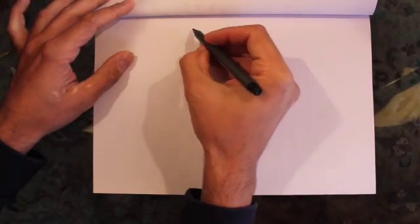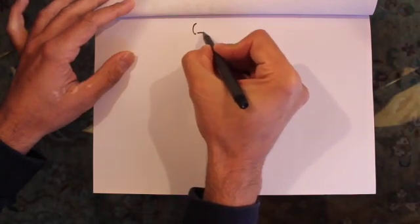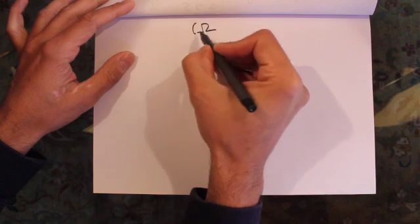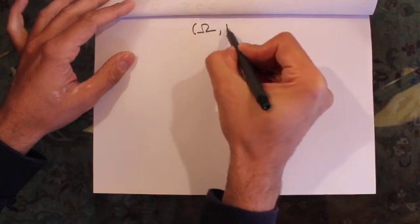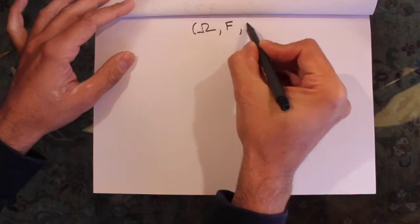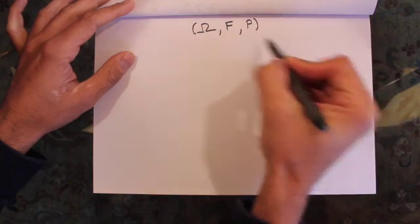Hi guys, so in the previous lecture we talked about Ito's integral for simple processes. Today I would like to extend that discussion to cover Ito's integral for general integrands. So let's assume that we have a probability space, and a probability space is given by capital omega which is a sample space, a sigma algebra, and a probability measure.